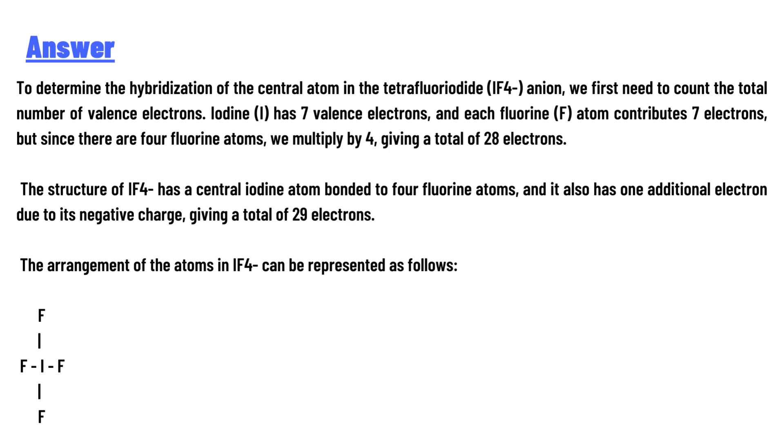To determine the hybridization of the central atom in tetrafluoroiodate IF4-, we first need to count the total number of valence electrons. Iodine has seven valence electrons, and each fluorine atom contributes seven electrons. Since there are four fluorine atoms, we multiply by four, giving a total of 28 electrons.